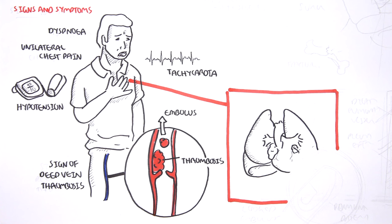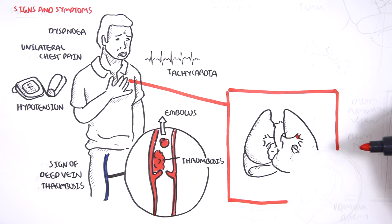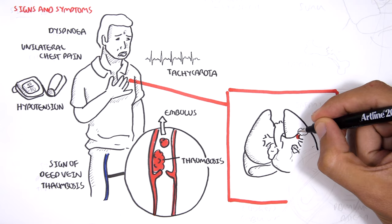When the embolus reaches the heart, the heart will pump the embolus to the lungs. The embolus can then lodge or get stuck inside one of the pulmonary vessels, thus resulting in pulmonary embolism.